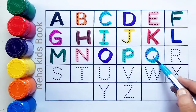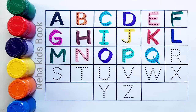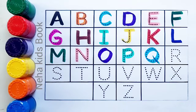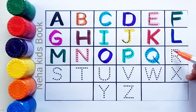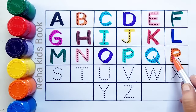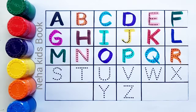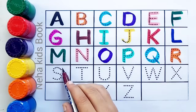Sky blue color. Q, Q for queen, Q for queen. Q ke baad aata hai R. Orange color. R, R for rainbow, R for rainbow. Brown color.